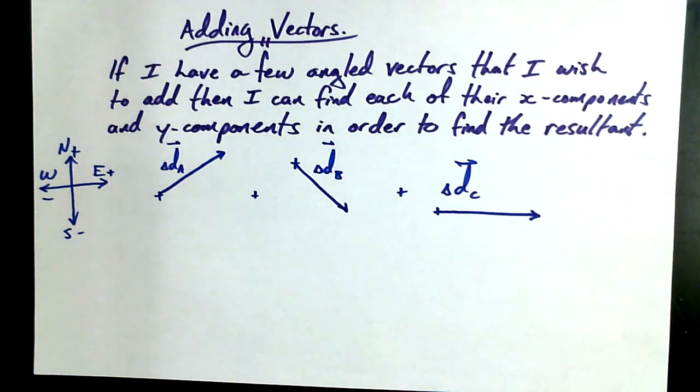Okay, so we've got three vectors, vector A, B, and C, and I'd like to add vectors A, B, and C together to get some resultant vector. What we're going to do as we do this is find the X components and Y components of all three vectors.